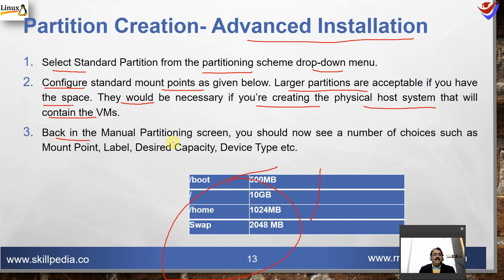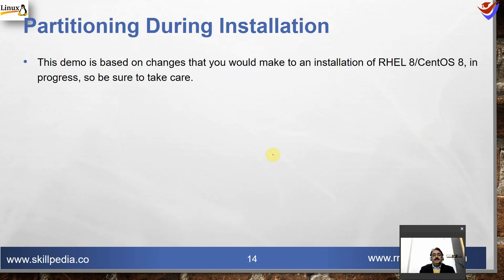In the manual partitioning screen, you'll see options such as mount point, labels, desired capacity, and device types — we'll review those during the demo. The demo is based on changes made during an installation of RHEL 8 or RHEL 7 in progress.